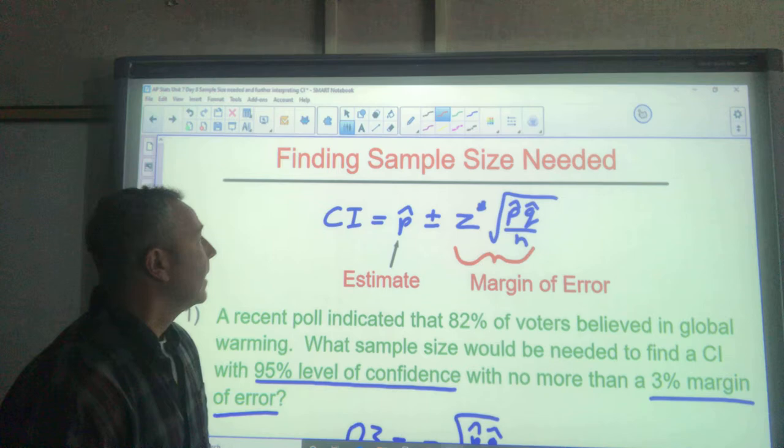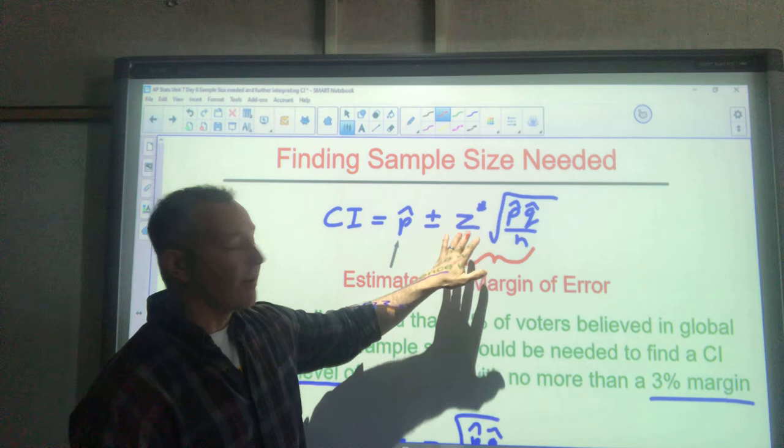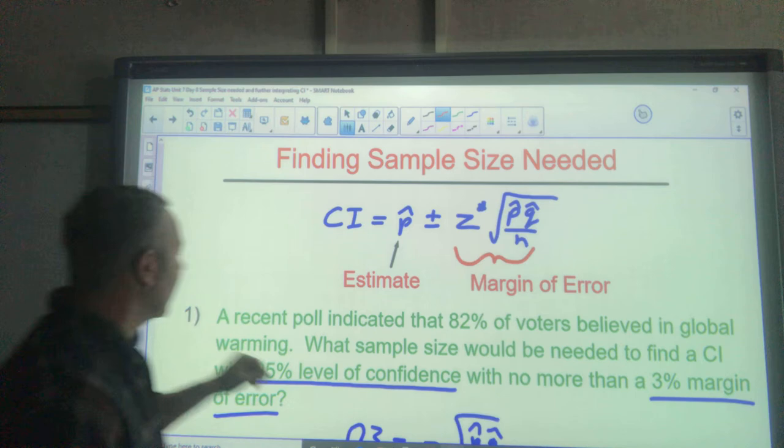Okay, so a common problem on the AP exam—there's kind of two situations and we'll do both here. First of all, this is our confidence interval. It's our estimate plus our margin of error, and our margin of error consists of our z-score and then our standard error for a confidence interval.